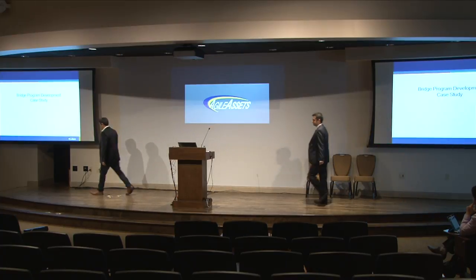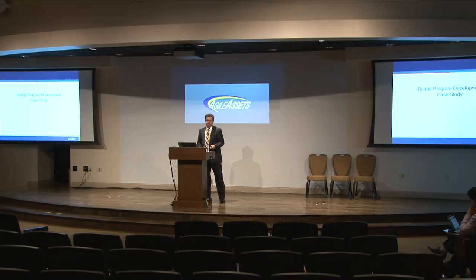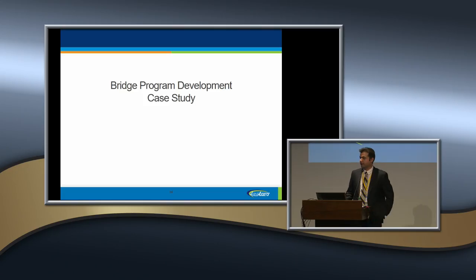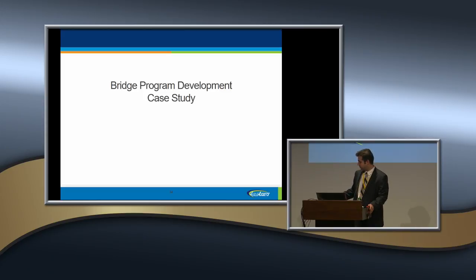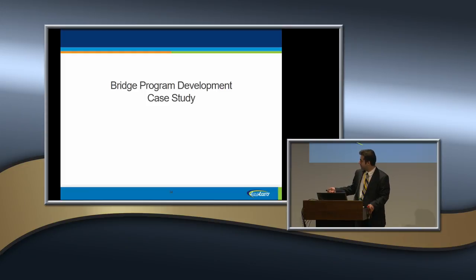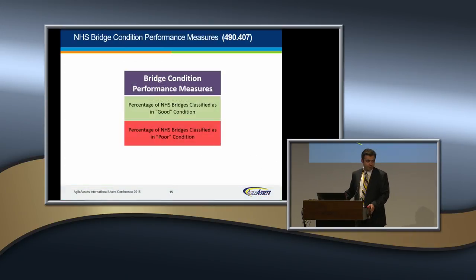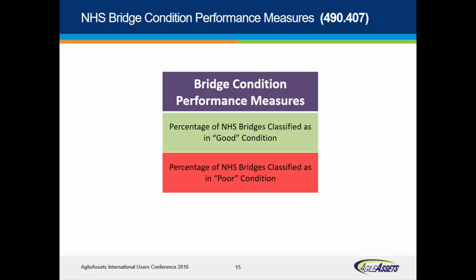Good afternoon. My name is Muhammad Sayar, I'm with Agile Assets for over three years. The second part of this presentation is a case study on bridge program development for Georgia, based on MAP-21 performance measures. I'll cover performance measures quickly — MAP-21 introduced them into three categories: the percentage of NHS bridges classified as good condition, poor condition, and fair condition (everything in between).